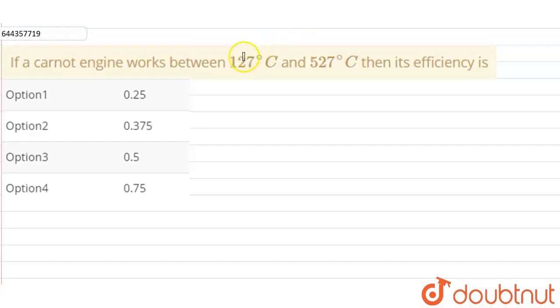If a Carnot engine works between 127 degrees Celsius and 527 degrees Celsius, then its efficiency is... Okay, so we have to find the efficiency of a Carnot engine which is working between the temperature limit of, let us suppose,